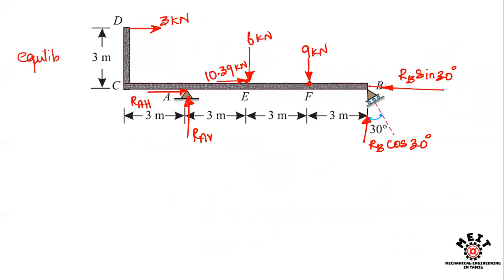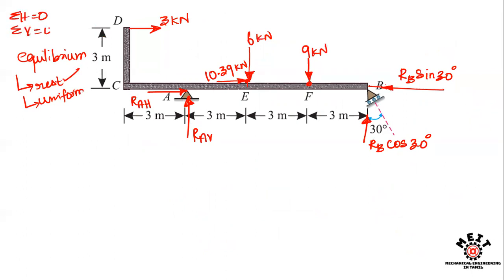The beam is in equilibrium condition — it is at rest, not in motion. In the resting condition, the sum of horizontal forces is zero, the summation of vertical forces is zero, and the summation of moments is equal to zero. In all forces and moments, the summation is zero. The first equation is the summation of horizontal forces equal to zero.